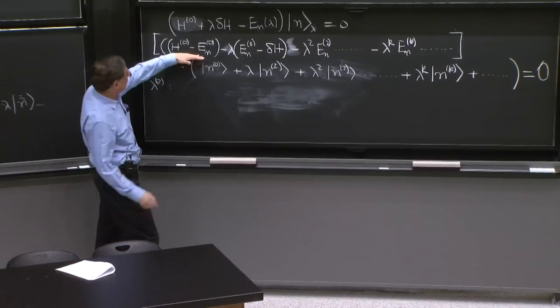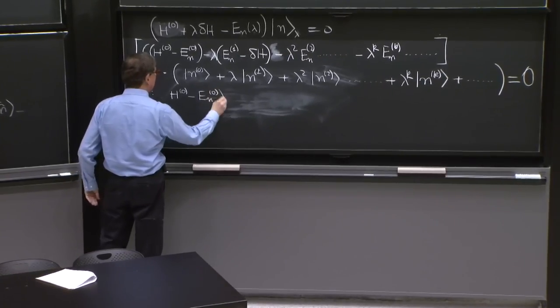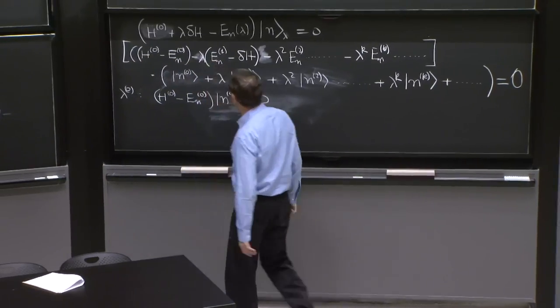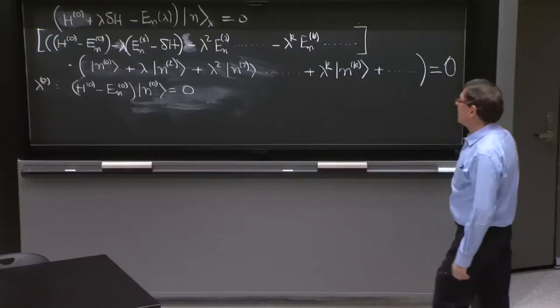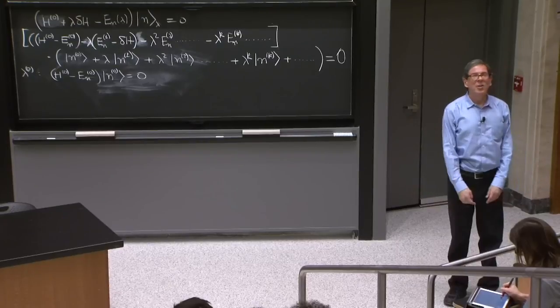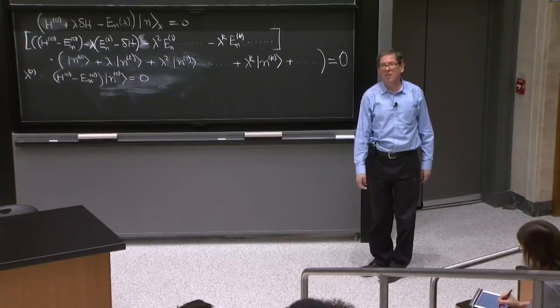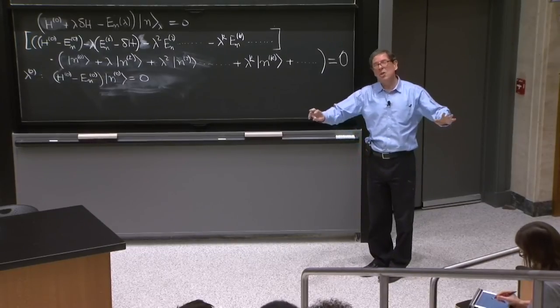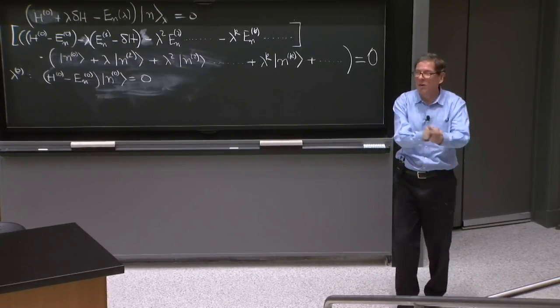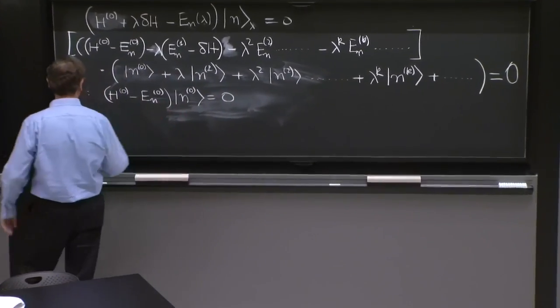Well, 0th order in lambda, we get this equation: H0 minus En0 on n0 equals 0. That's 0th order in lambda. And that's an equation that is not new. You knew it. That's a statement that n0 was an eigenstate of the original Hamiltonian. So it's good. The 0th order things had to work, because we said to 0th order, you have the known Hamiltonian. So let's look at the term with order lambda.